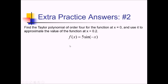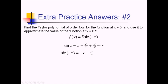The Maclaurin series for sine of x is x minus x cubed over 3 factorial plus x to the fifth over 5 factorial. No need to keep going since we just want a fourth-order polynomial. Next, plugging in negative x means replacing all the x's with negative x's: the first term becomes negative x, negative x cubed is positive so we get plus x cubed over 3 factorial, and negative x to the fifth stays negative, giving minus x to the fifth over 5 factorial.